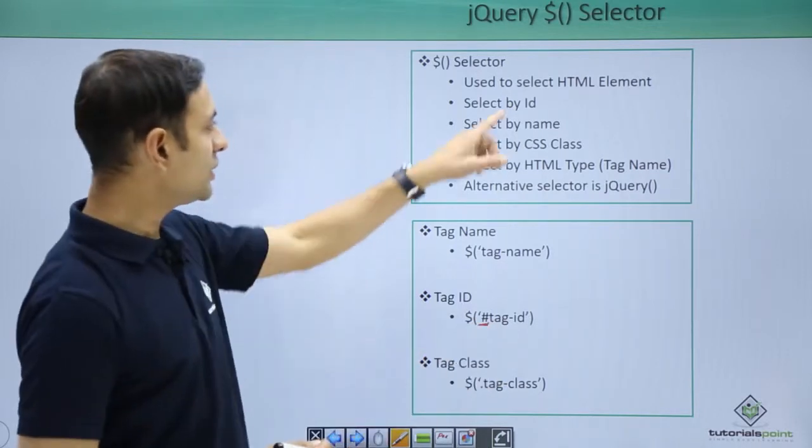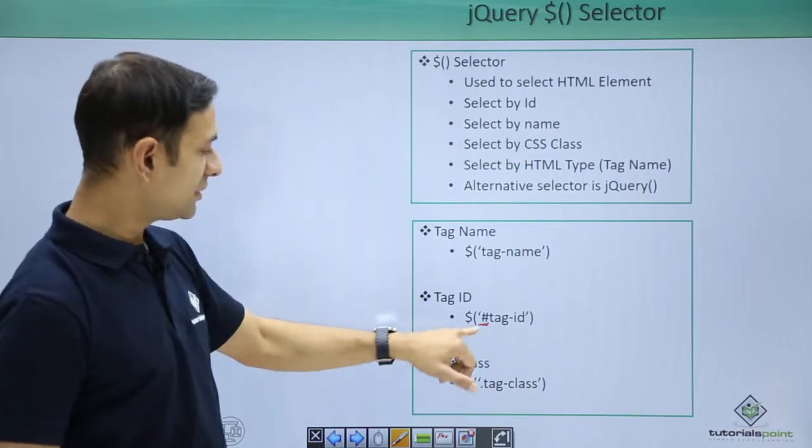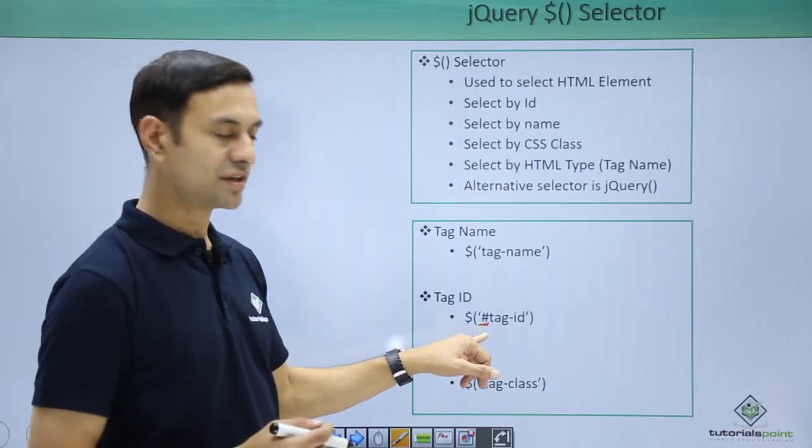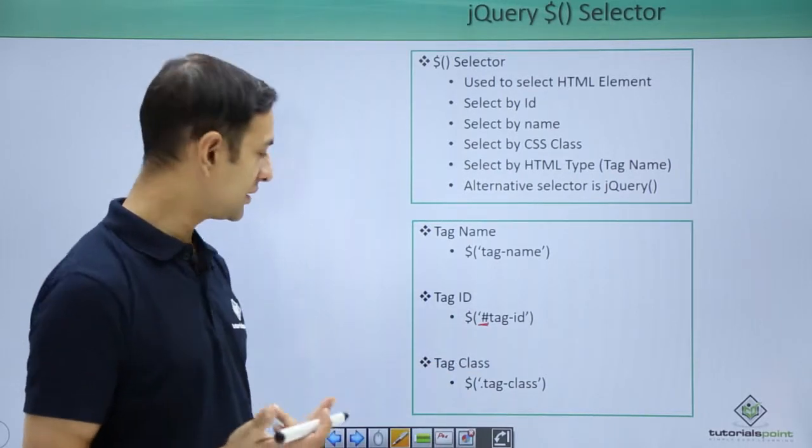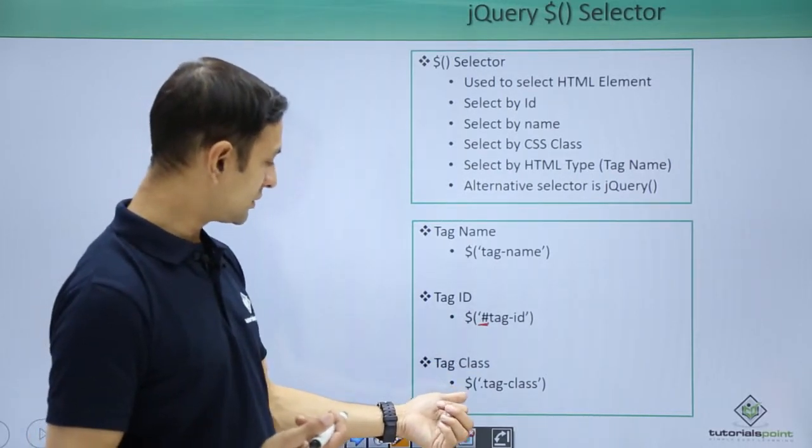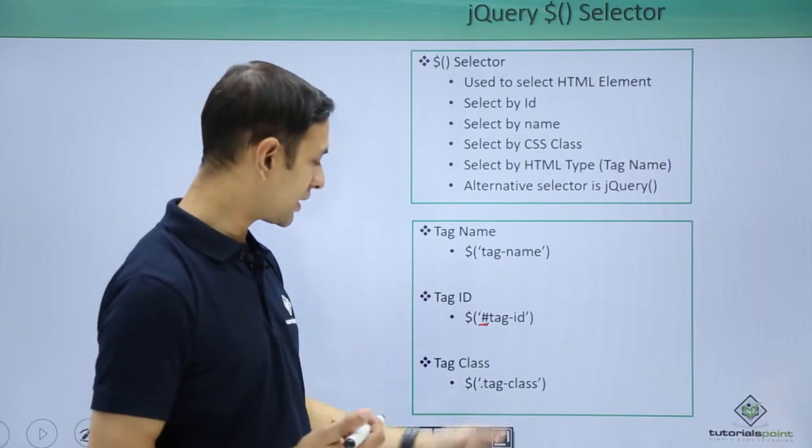In case you are using select by ID, make sure you are having hash with it. Otherwise, tag class - you know the class CSS class of the element, then you can search like this: dollar dot tag hyphen class.